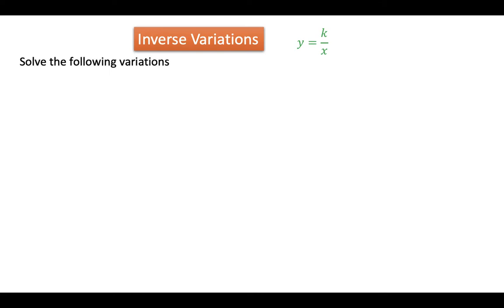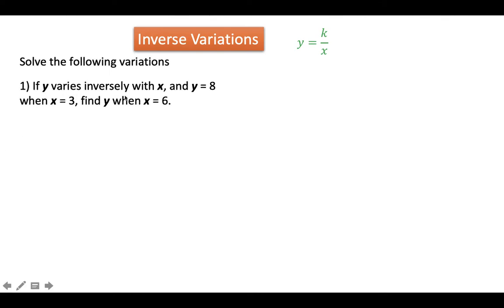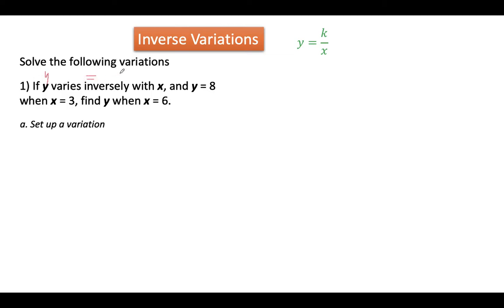So how do we solve an inverse variation problem? Given: if y varies inversely with x and y is equal to 8 when x is equal to 3, find y when x is equal to 6. It is the same setup as direct variations. First, we set up the variation: y varies inversely, so we get the reciprocal of x, which is 1 over x, and the constant k is in the numerator. So our variation is y is equal to k over x.